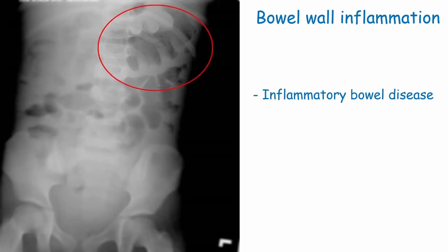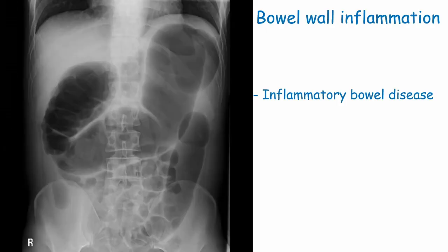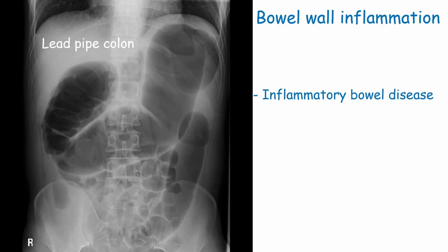Occasionally, bowel wall inflammation can be visible on an abdominal x-ray in the context of inflammatory bowel disease. There are three main x-ray findings. Firstly, thumbprinting - this occurs when the large bowel wall is inflamed and the haustral folds become thickened, giving the appearance of thumbprints. Toxic megacolon is large bowel dilation without any mechanical obstruction; it occurs in ulcerative colitis, can be fatal, and is usually associated with fever and haemodynamic instability. Lead pipe colon sign is a feature of chronic ulcerative colitis where the colon muscle hypertrophies over time, obscuring haustral folds and making the colon appear smooth and featureless.